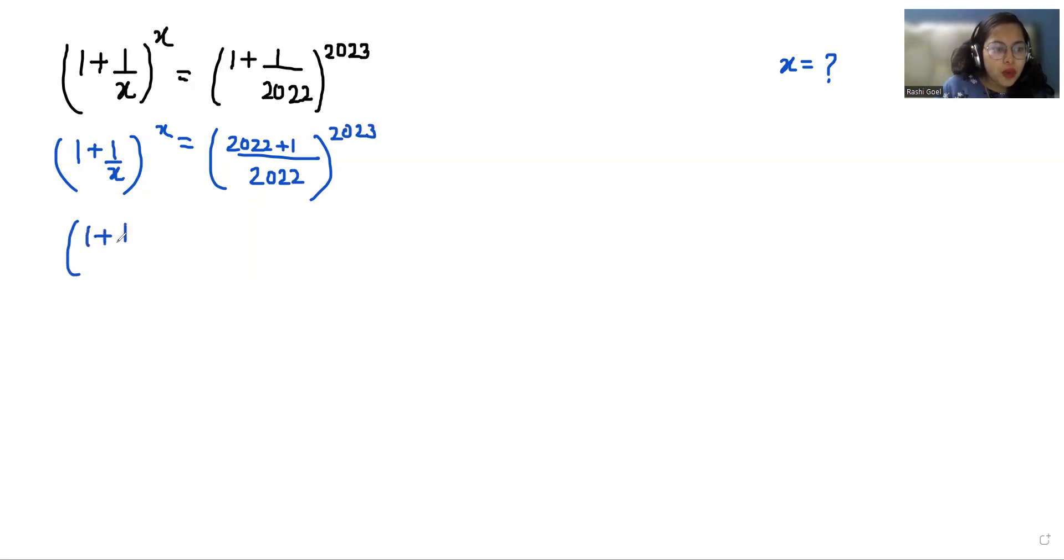So (1 + 1/x)^x = (2023/2022)^2023. Now according to the exponent rule, (1/x)^n we can write as x^(-n).